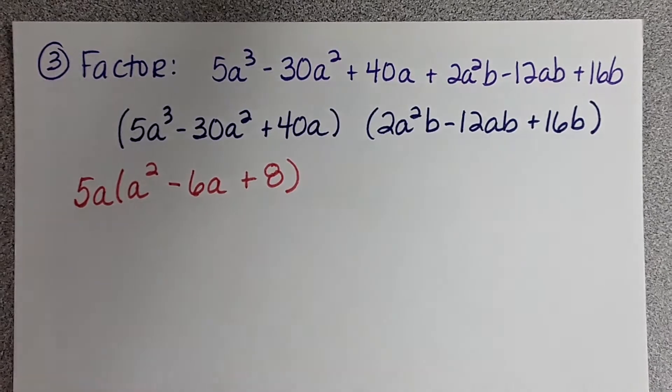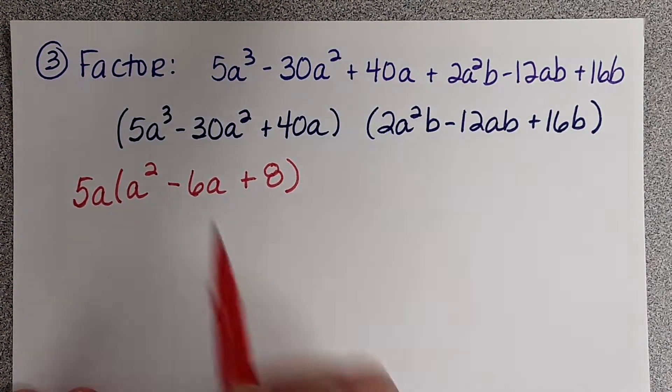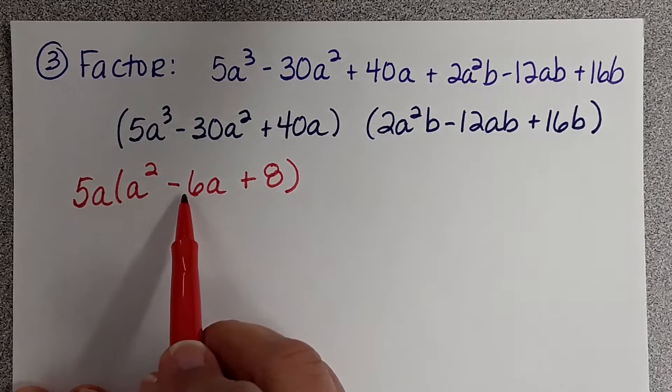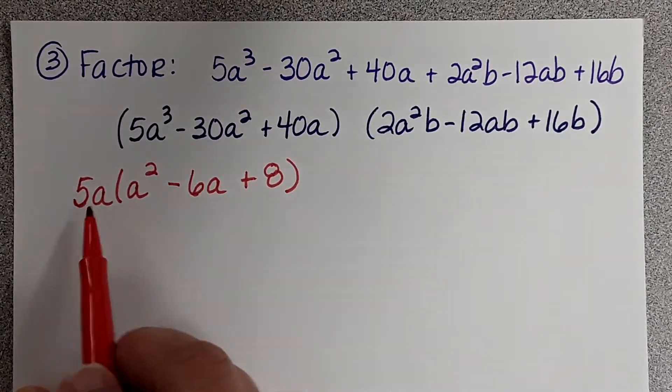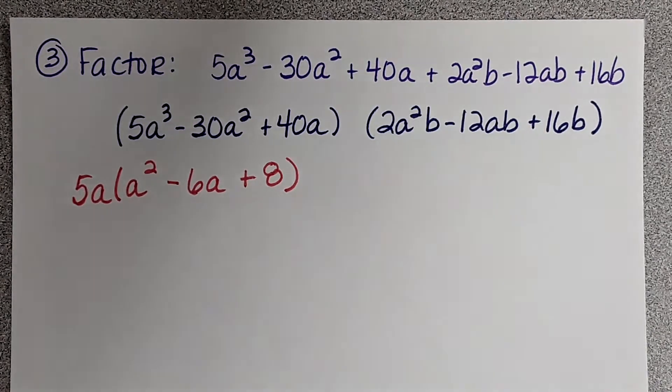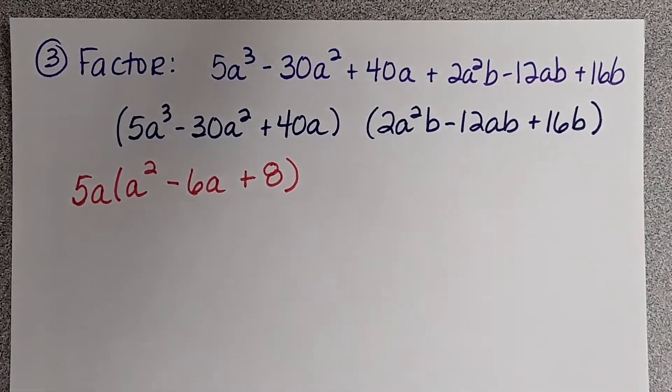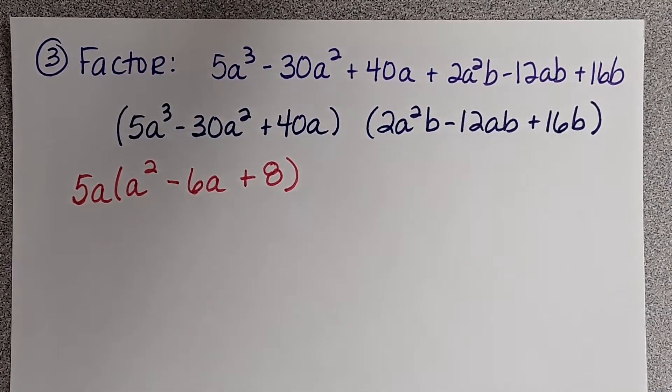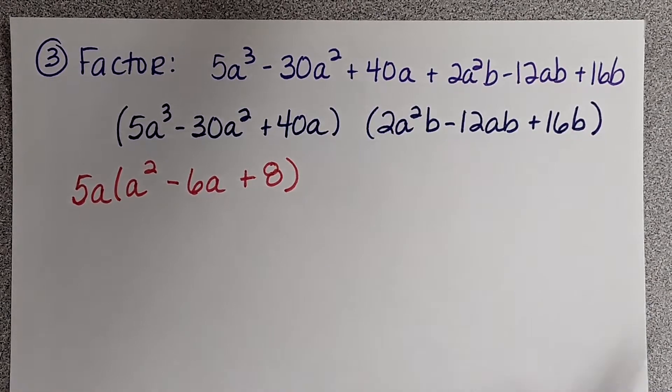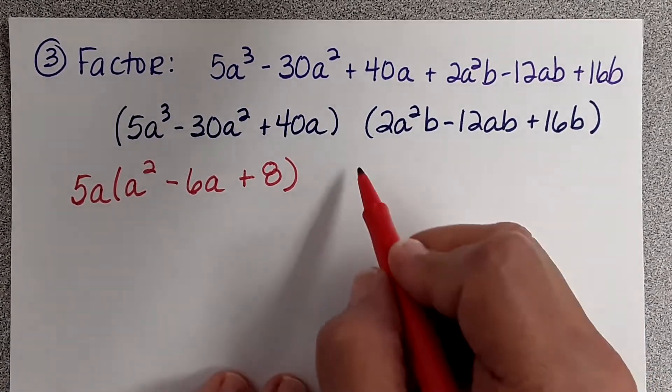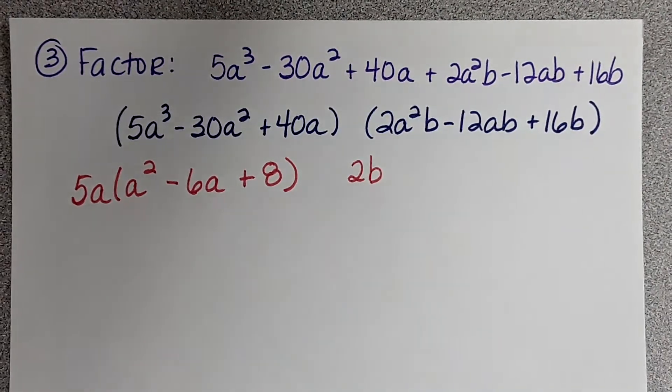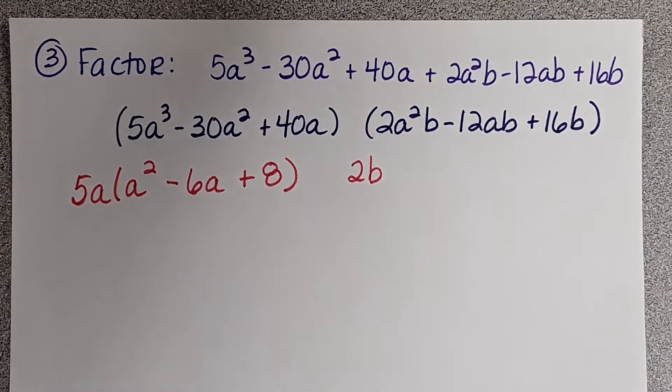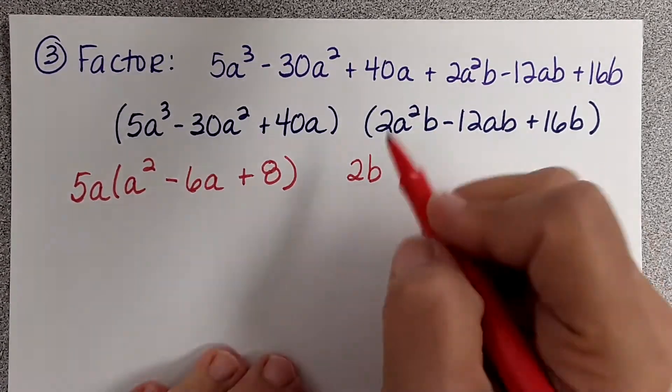Let's just make sure that Ms. Fleury actually did that correctly. 5A times A squared is 5A to the third. 5A times negative 6A is negative 30A squared. 5A times 8 is 40A. Now, let's look at the second one, the second three. Do they have anything in common? A two. I want you to know that when I looked at this problem, I thought they had an A also, but they don't have an A. They only have a B.